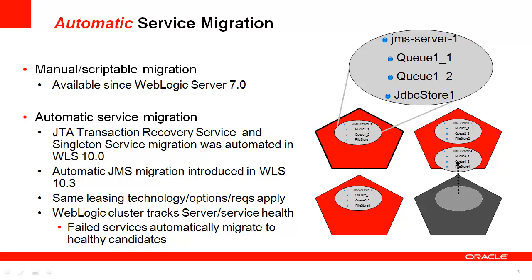Automatic service migration relies on the cluster leasing functions within WebLogic clustering. This functionality controls which servers in a cluster host which migratable targets. There are two options for configuring cluster leasing: one stores the leasing information in a database, and the other stores the information in memory. If you are using a database to manage leasing information, you should also configure the database to be highly available. Setting the migration basis to database leasing requires that the data source for automatic migration is set for the cluster to a valid JDBC system resource, and implies there is a table created on that resource that the managed servers will use for leasing. Setting the migration basis to consensus leasing means that the member servers maintain leasing information in memory, which removes the requirement of having a highly available database.